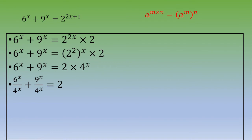Then you can simplify: 6 divided by 4 is 3 divided by 2 power x, plus 9 divided by 4 is 3 squared over 2 squared power x, equals 2.